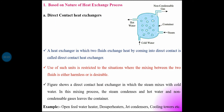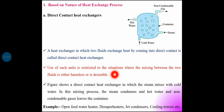Based on nature of heat exchanger process: classification of direct contact heat exchanger. In direct contact heat exchangers, two fluids — a hot fluid and a cold fluid — exchange heat by coming into direct contact. Heat exchangers in which two fluids exchange heat by coming into direct contact are called direct contact heat exchangers. Use of such units is restricted to situations where the mixing between two fluids is either harmless or is desirable.